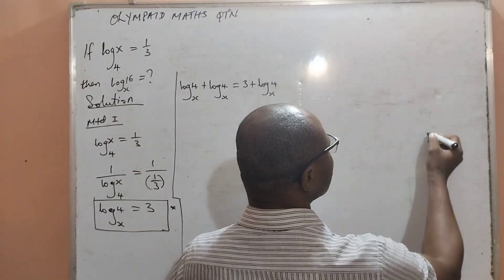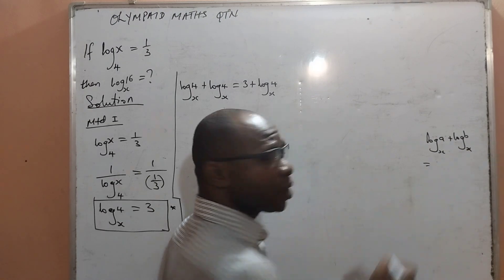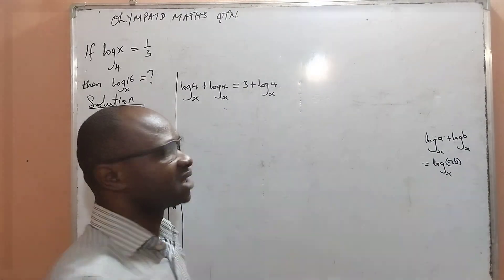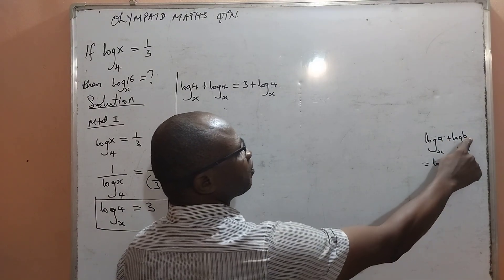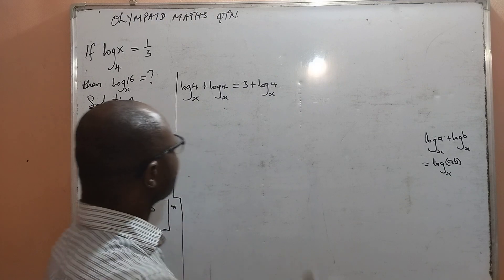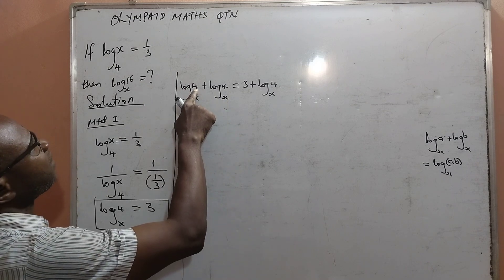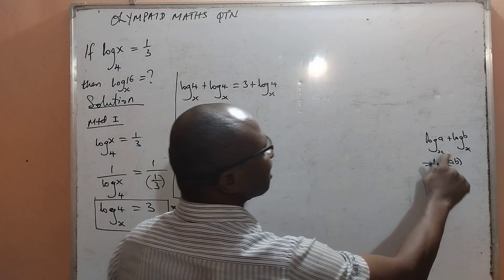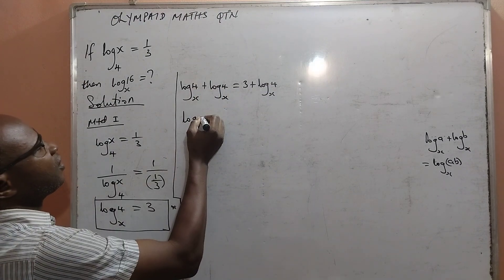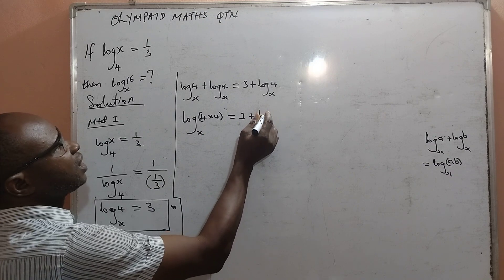There is a law in logarithms that says: log a base x plus log b base x is equal to log (a·b) base x. What it means is that when the bases are the same, the arguments are multiplied. Applying that to the left hand side, since they are the same base, I will multiply 4 and 4 — where a is 4 and b is also 4 — giving me log of 4×4 base x.